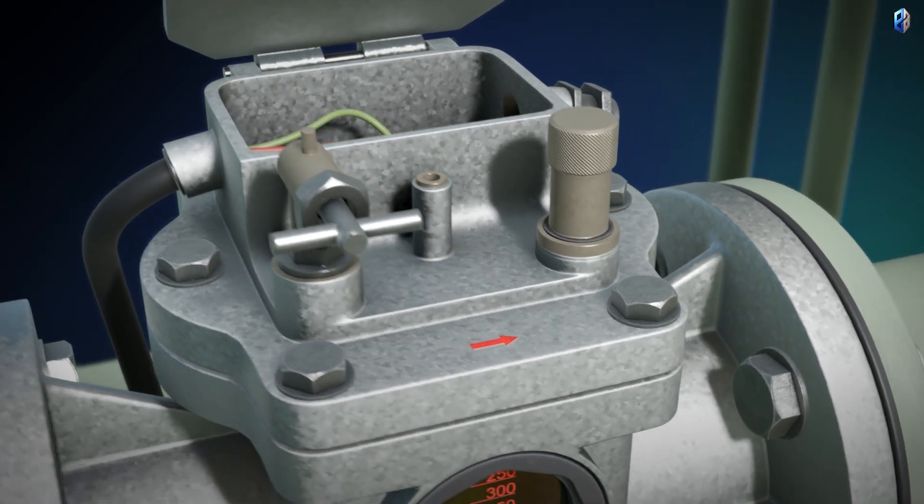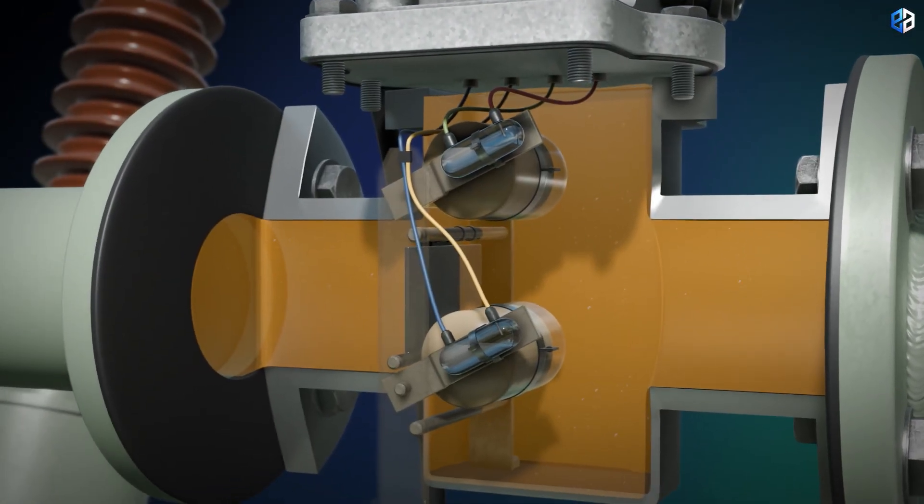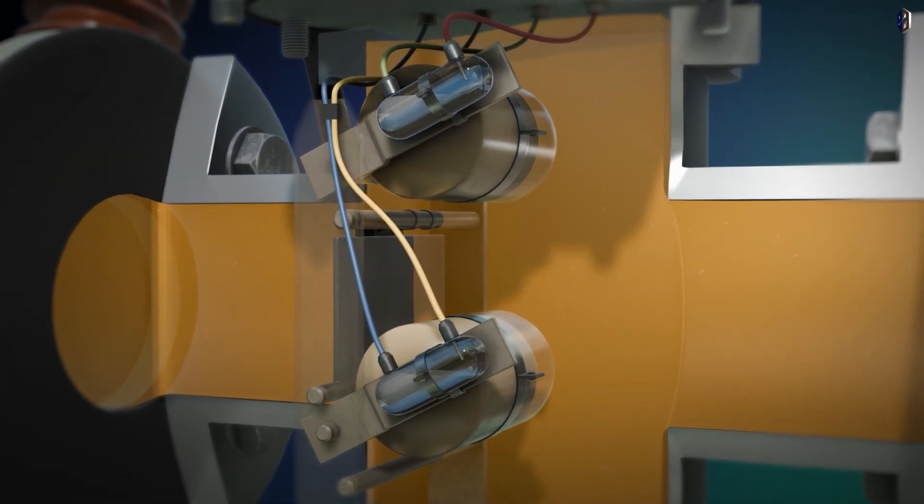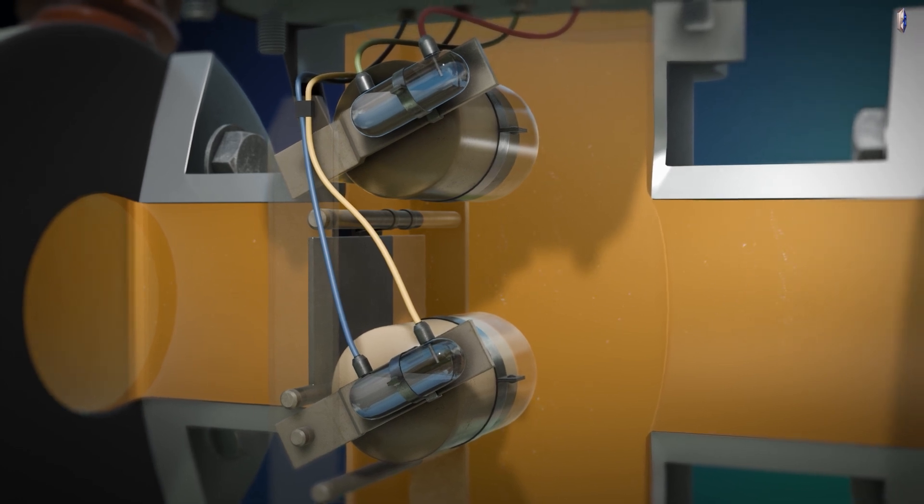The housing of the Buchholz relay is completely filled with transformer oil. There are two floats inside, similar to a water level regulator, one at the top, one at the bottom, which today are often designed with magnetic or reed switches.